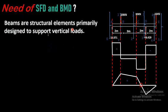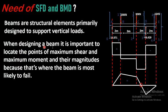Beams are structural elements primarily designed to support vertical loads. When designing a beam, it is important to locate the points of maximum shear — as I have shown, this is the point of maximum shear — and the maximum moment, this is the point of maximum moment. By using the section method, which I have explained in my previous videos on how to draw shear force and bending moment diagrams, you can find these critical points. The description of that video is given in the description, or you can simply click on the 'i' button appearing on the top right corner of your video.